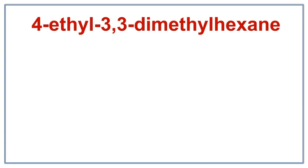Let's draw the structure for 4-ethyl-3,3-dimethylhexane. Hex tells us there are 6 carbons in the longest carbon chain. Ane tells us this is an alkane, meaning there are only single bonds between carbons.